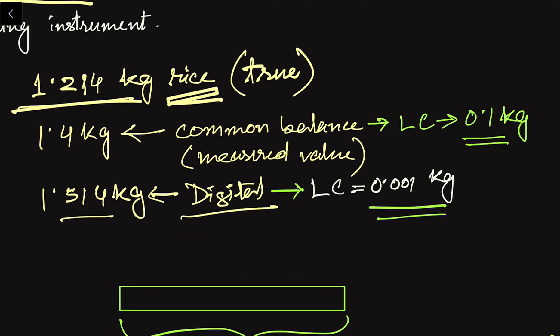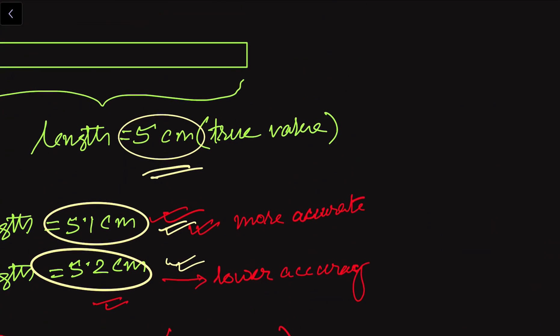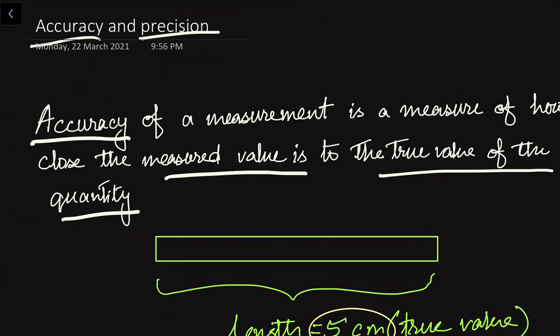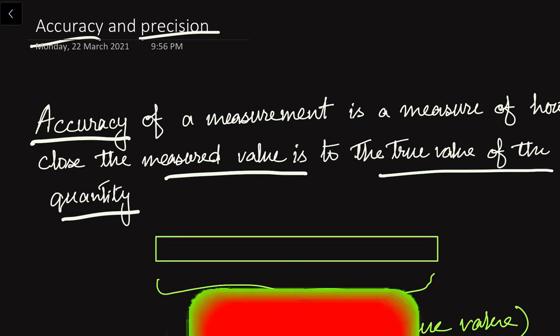In this way, we can understand what precision and accuracy are. In simple terms, accuracy means how close the measured value is to the true value of the quantity. Precision tells us about what resolution or limit the quantity is measured — it depends on the least count. Lower the least count, the more precise the instrument. Precision is a property of the measuring device or instrument, while accuracy compares the measured value to the true value.